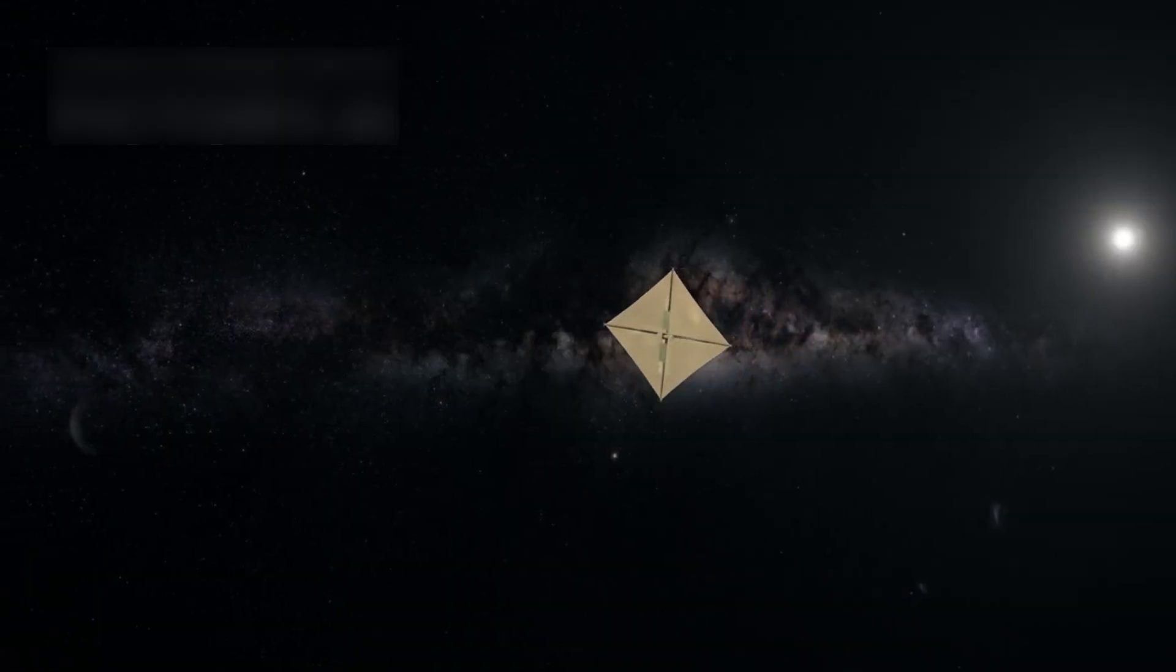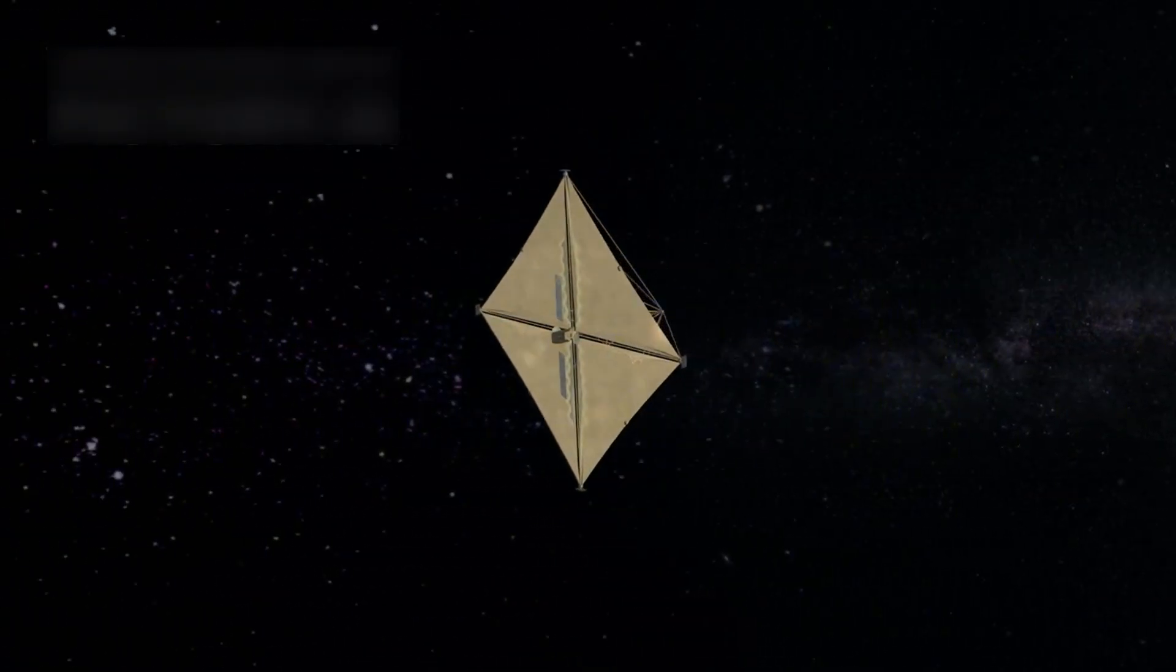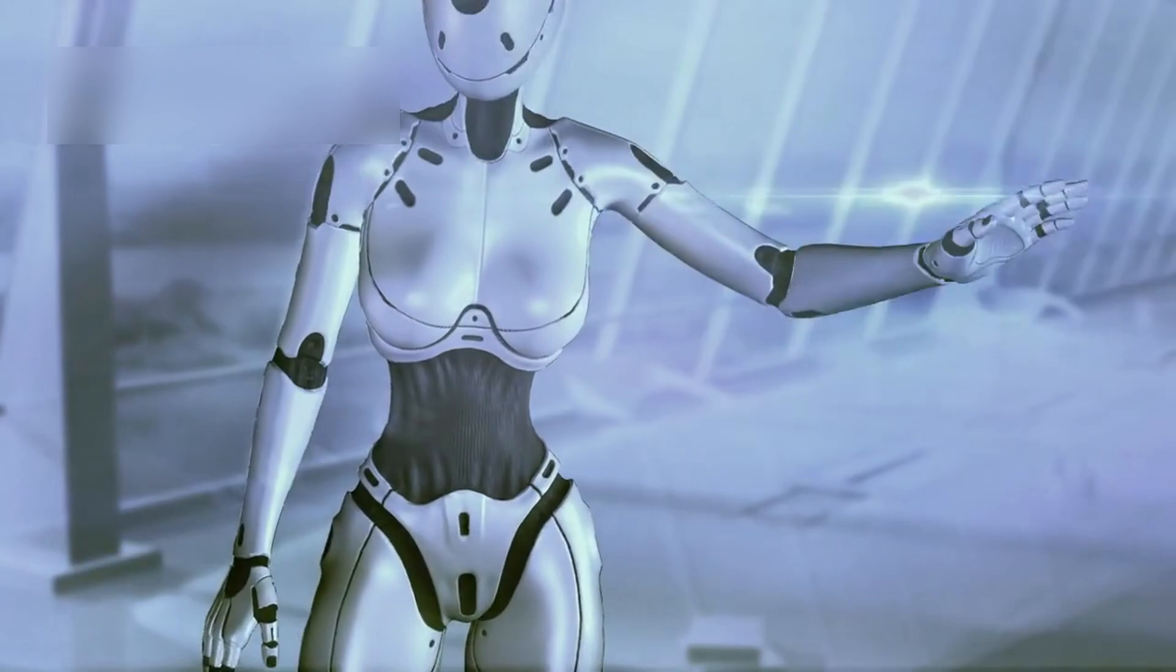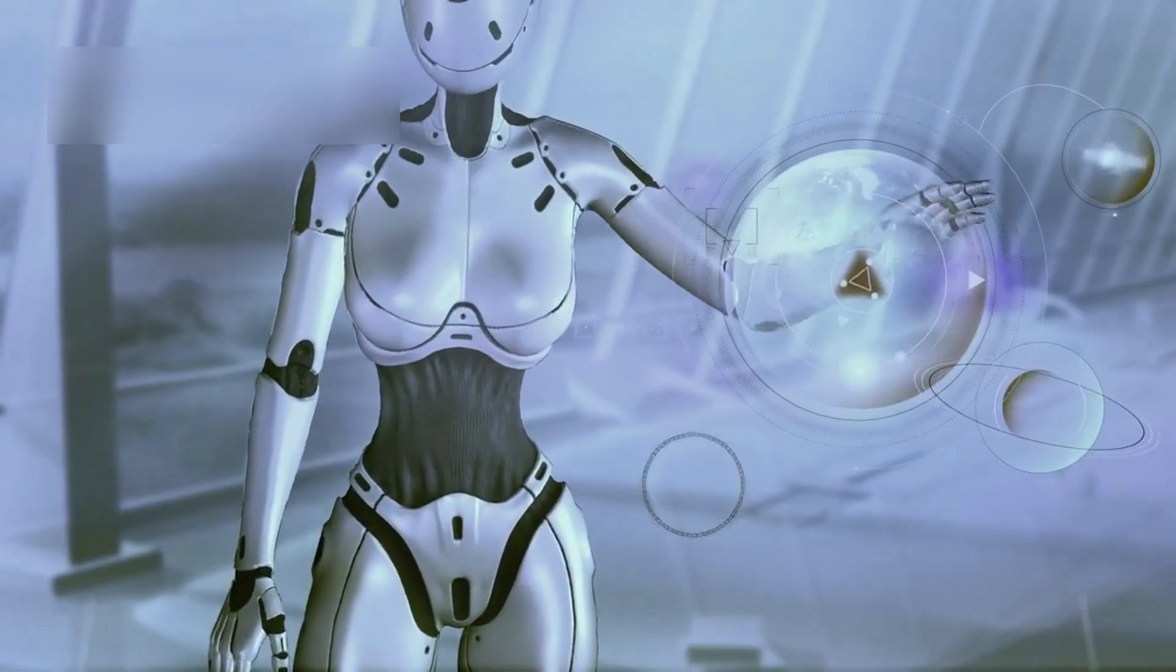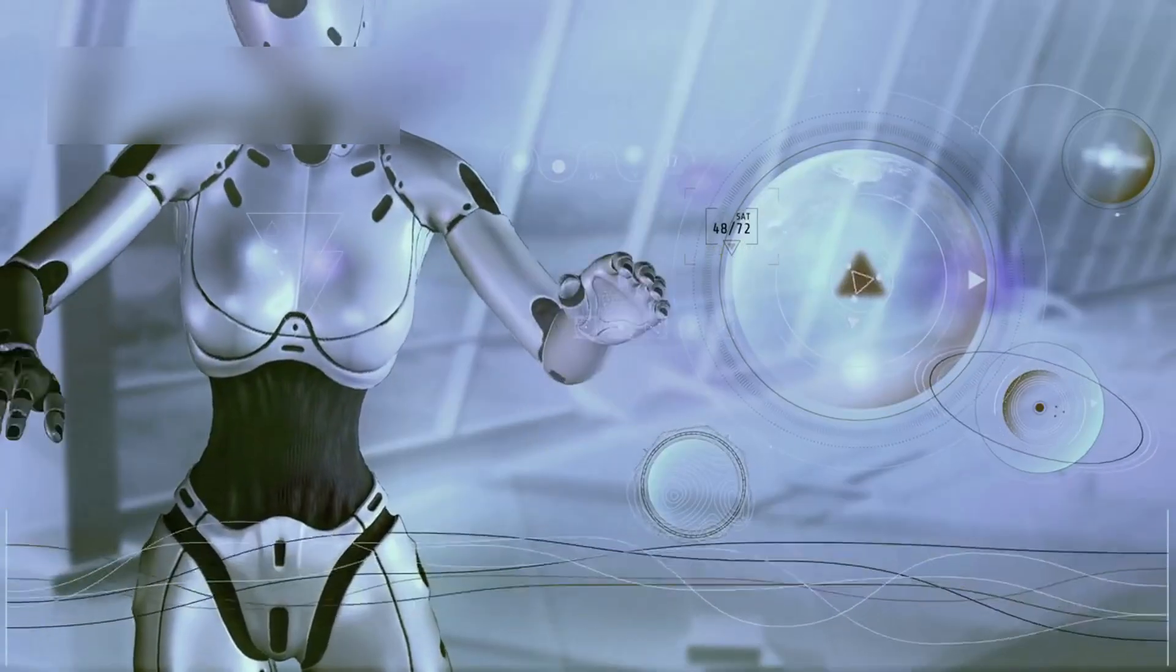The Breakthrough Starshot project plans to send tiny laser-propelled probes to Proxima b. These grain-sized robots would travel for 20 years and capture detailed data when they arrive. With their nanosensors, they could analyze gases, light, heat, and take photos with centimeter detail.